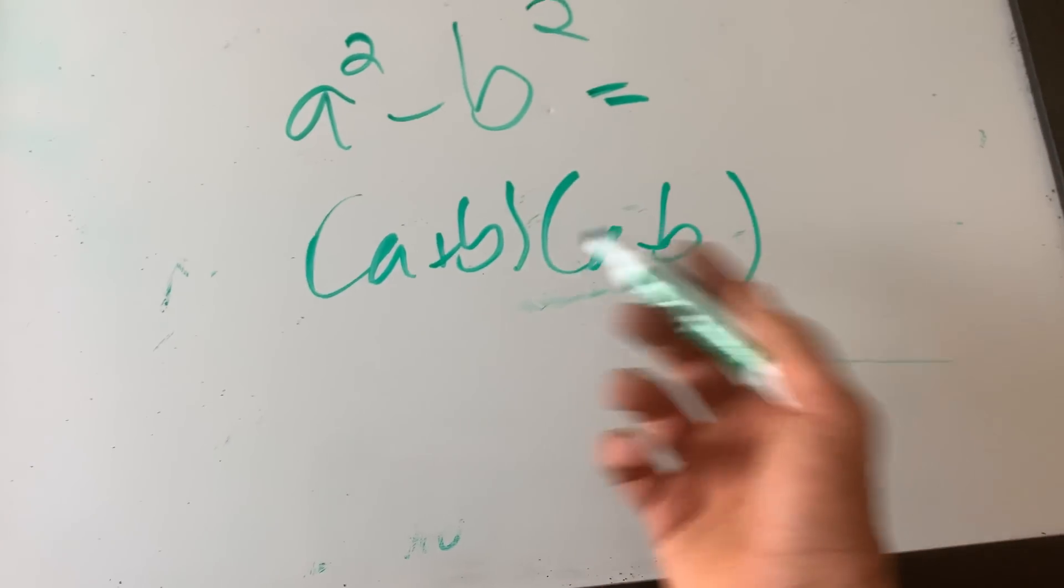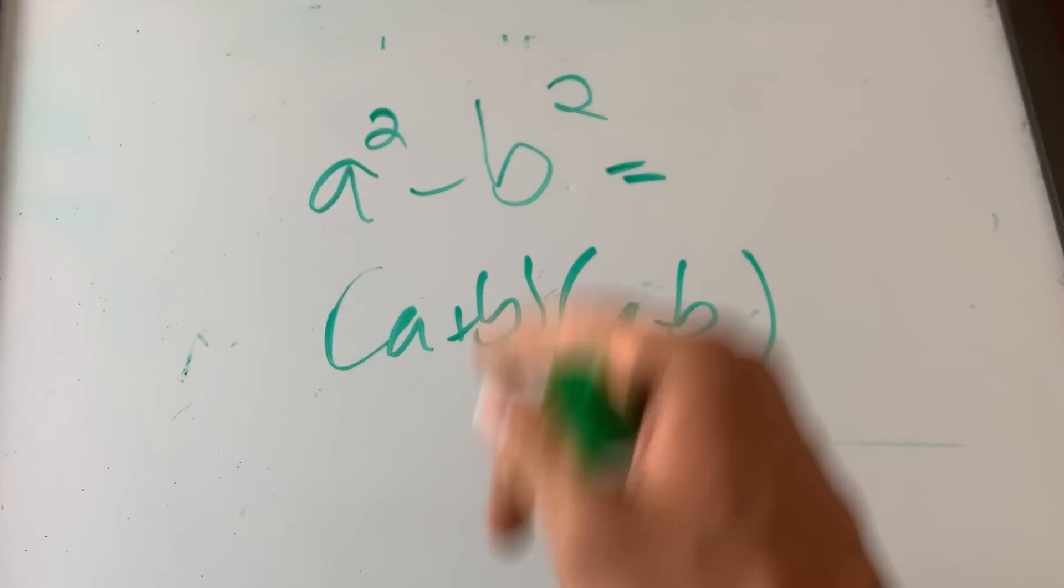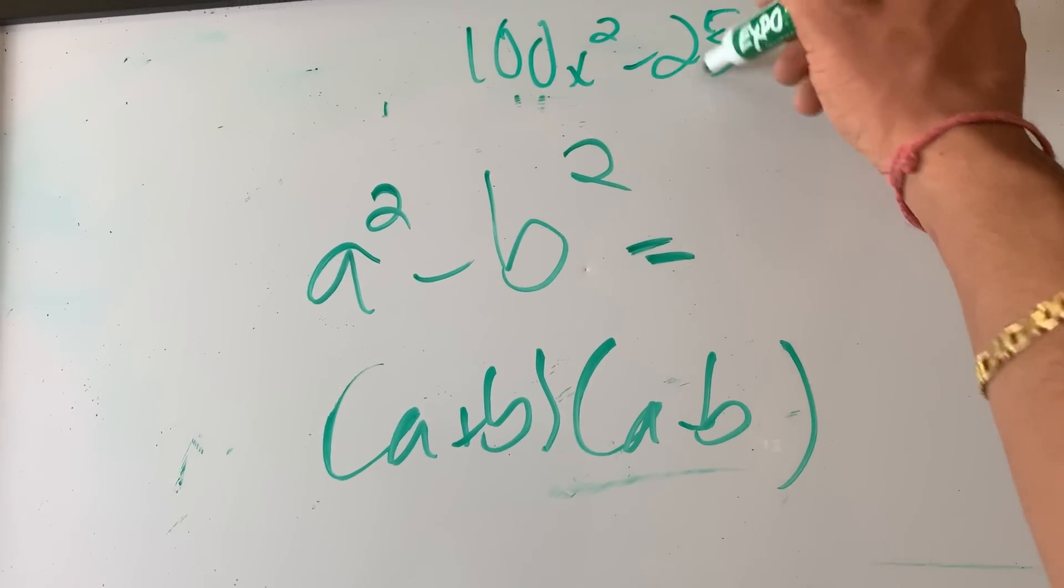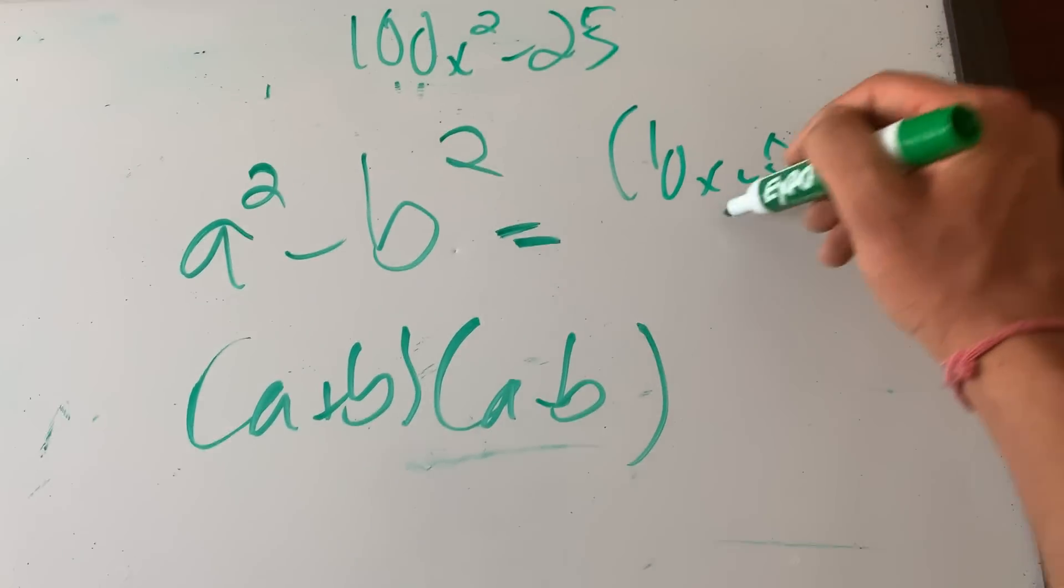This is equal to a plus b times a minus b. Remember this, or a minus b times a plus b, whatever way you want to do it. You have to remember this by heart. Recognize any problem in this form. You see 100x squared minus 25. Boom, factor this right now. 10x minus 5 times 10x plus 5, right?